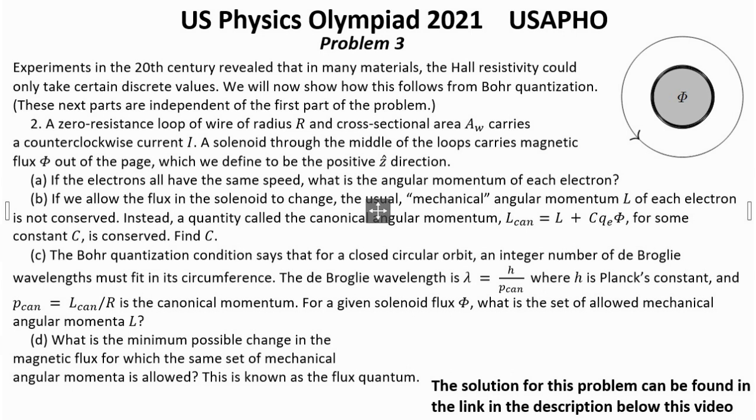Question B: If we allow the flux in the solenoid to change, the usual mechanical angular momentum L of each electron is not conserved. Instead, a quantity called the canonical angular momentum L_can equals L plus C Qe Φ for some constant C is conserved. Find C.